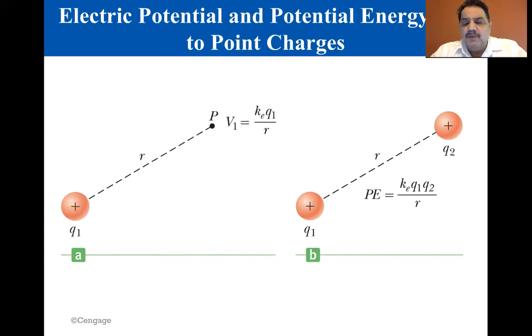So we can express the electric potential energy of the pair of charges as shown in the equation on the far right-hand figure. If the charges are of the same sign, PE is positive, because like charges repel. Positive work must be done on the system by an external agent to force the two charges near each other.